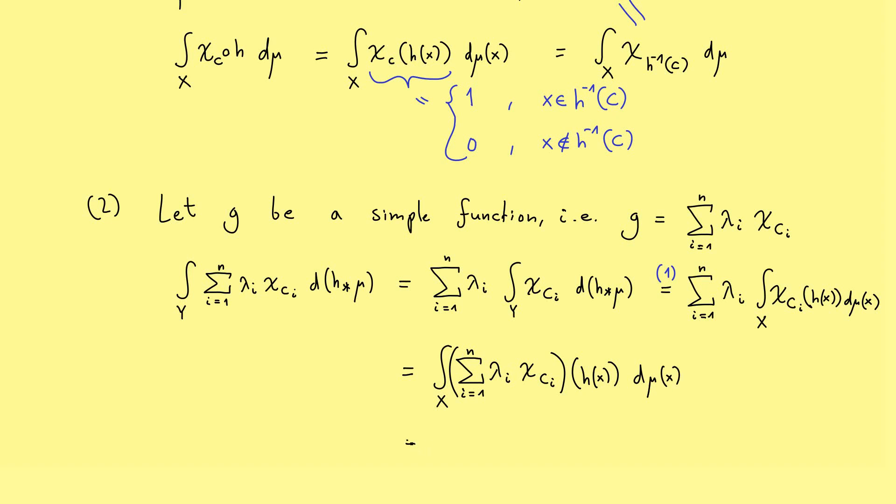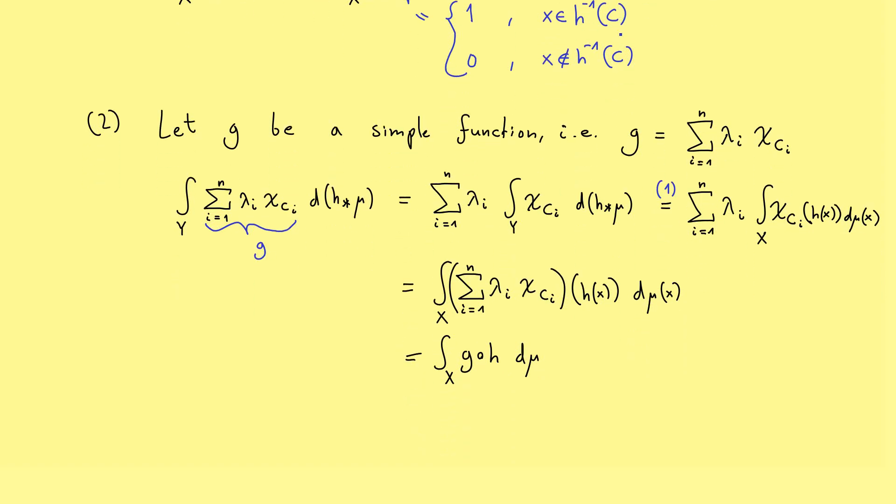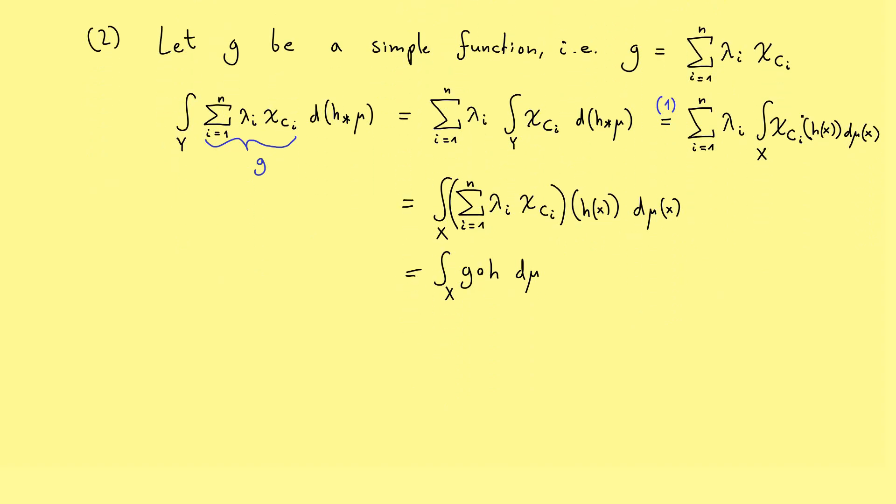However, now you see this is exactly our right-hand side, because this is just g, our simple function, and the composition with h over X and the measure μ. And of course, on the left-hand side, we started with the function g. And with this, we have proven the substitution rule for all simple functions.